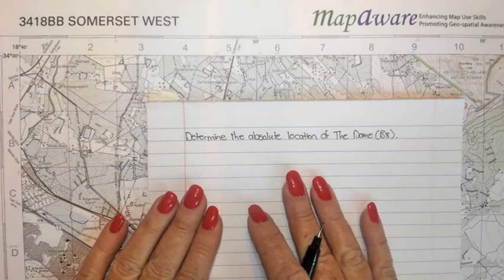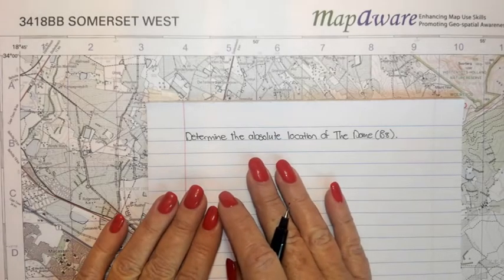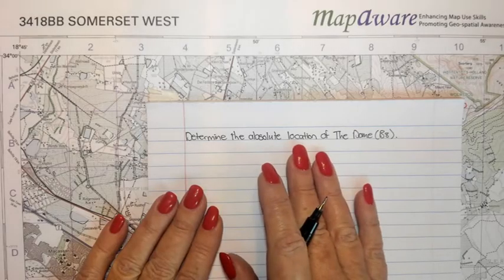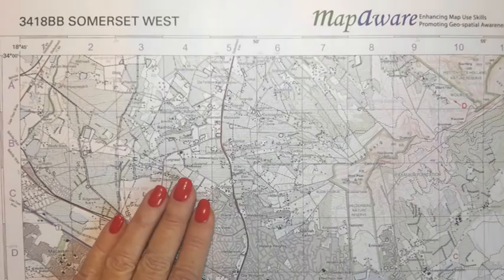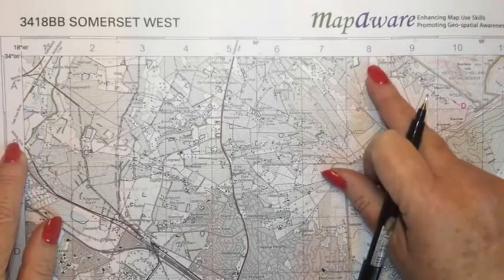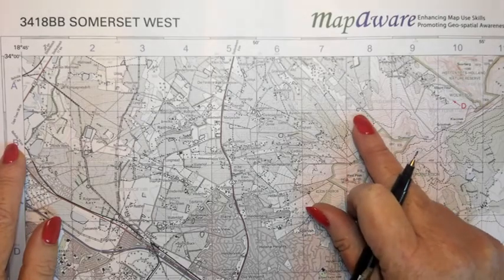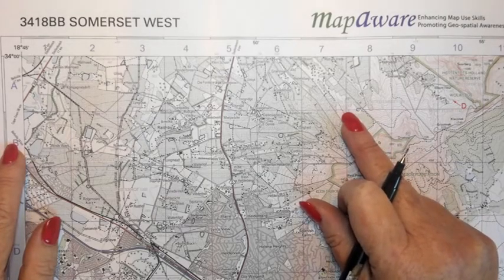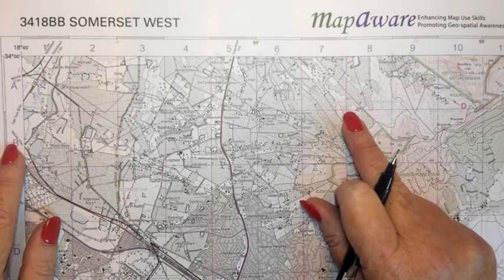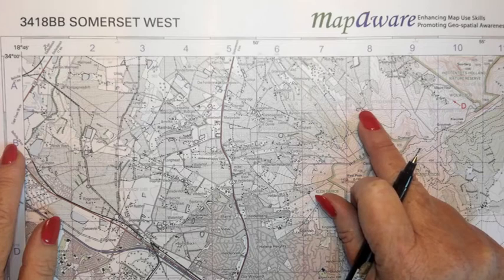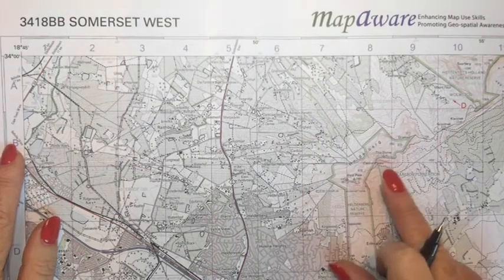This video shows you how to calculate the absolute location. The example I'm going to use is: determine the absolute location of the dome in block B8. If you go to your map you will see B8, so we know it's somewhere in this block. When we calculate absolute location, we always use the top left hand corner to determine which line is our latitudinal line and which line is our longitudinal line.